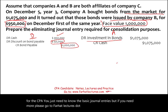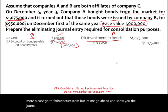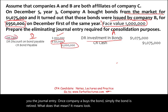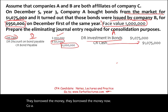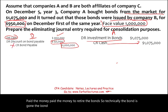Once company A buys the bond, the bond is simply retired. They borrowed the money — now company A paid the money to retire the bond. So technically the bond is gone; it's no longer with an outside party because the affiliate bought it. What happens next is we have to eliminate the bond — we debit bonds payable.